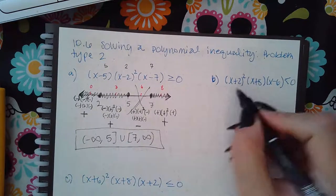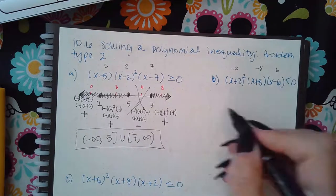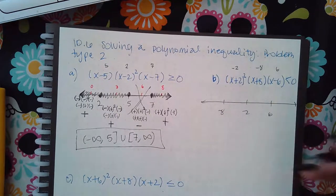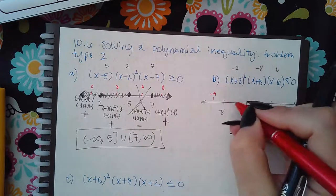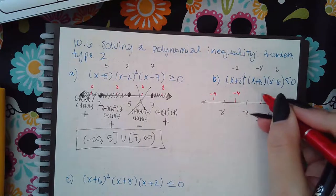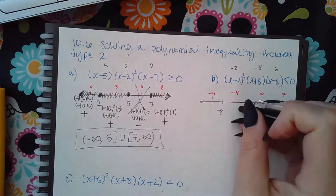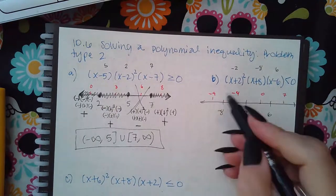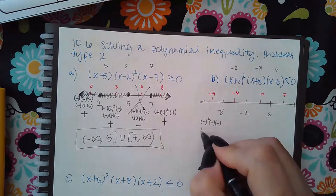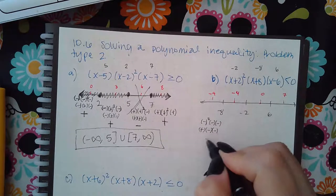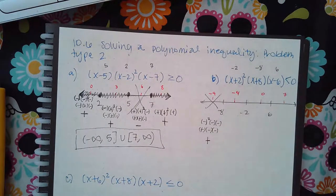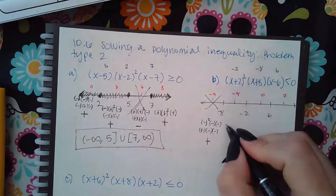Now let's try another one. Setting factors equal to 0, I get negative 2, negative 8, and positive 6. Putting those in order: negative 8, negative 2, and 6. I'll pick test values of negative 9, negative 4, 0, and 7. Plugging in negative 9 gives a negative squared times a negative times a negative, which is positive times a negative times a negative — positive in the end. But positives are not less than zero, so this section is not part of my answer.